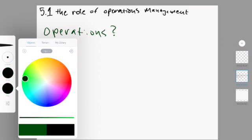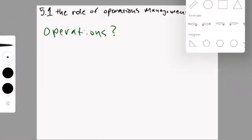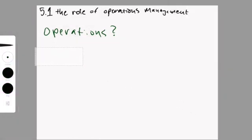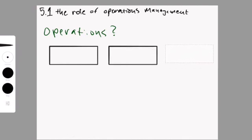So 5.1 is about the role of operations management. If you recall the model of a business, which was the input, then add value, and output, you will know that operations is part of the add value. Essentially, operations is the production of a service or a product or a good that adds value to the business.